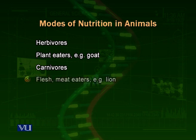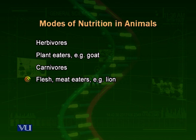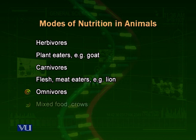Carnivores are organisms which acquire their energy or food in the form of meat or proteins — we can call them flesh eaters. They eat other animals; for example, the lion eats deer, monkeys, cows, or buffalos. Then come the omnivores, the third category, which can eat both plants and meat. Human beings are omnivores — we eat meat and also various plants like vegetables.